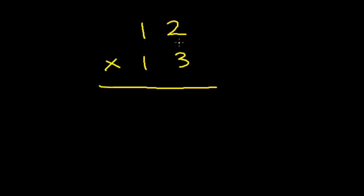Let's take the first example, 12 into 13. First, we multiply the right hand digit numbers. That is 2 into 3. We use a separator.